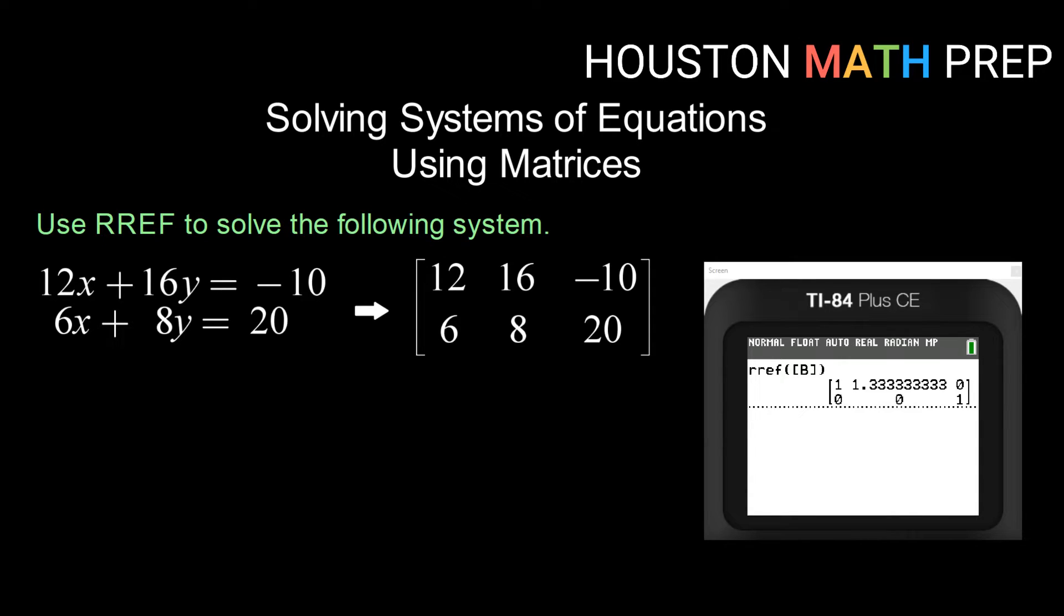Okay, so this one looks a little bit different. Remember, when we normally do row reduced echelon form, we have one zero and a number, zero one and a number. And that top row usually tells us what x is equal, and that bottom row tells us what y is equal. Notice here we have something else. We have one, a number, and then zero. And then in the bottom row, we have zero, zero, one.